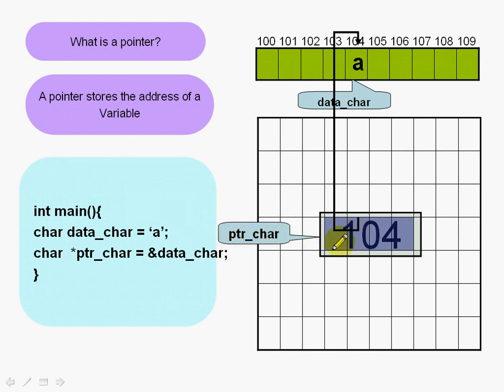You can see that ptr_char stores 104, which is the address of data_char which stores the literal 'a'.